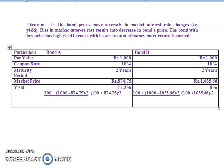Theorem 1: bond prices move inversely to market interest rate changes, that is yield. A rise in market interest rate results in a decrease in bond price. The bond with low price has high yield because with a lesser amount of money, more return is earned.